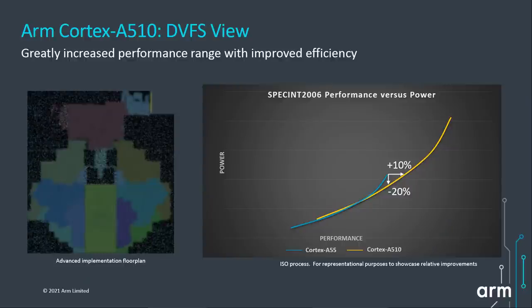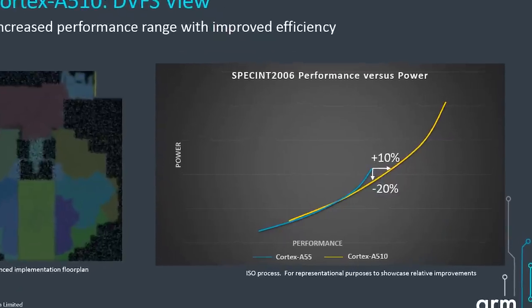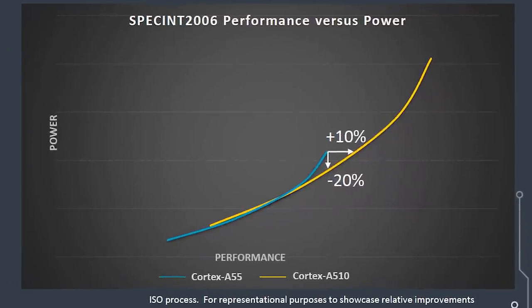Here is a graph representing what we could expect from the Cortex-A510. At lower levels of power it tracks closely with the Cortex-A55, but as things get harder, the A510 offers more performance with less power. For the same performance as the A55, you're using 20% less power, or for the same amount of power you get 10% more performance — double digit numbers in energy efficiency and performance.